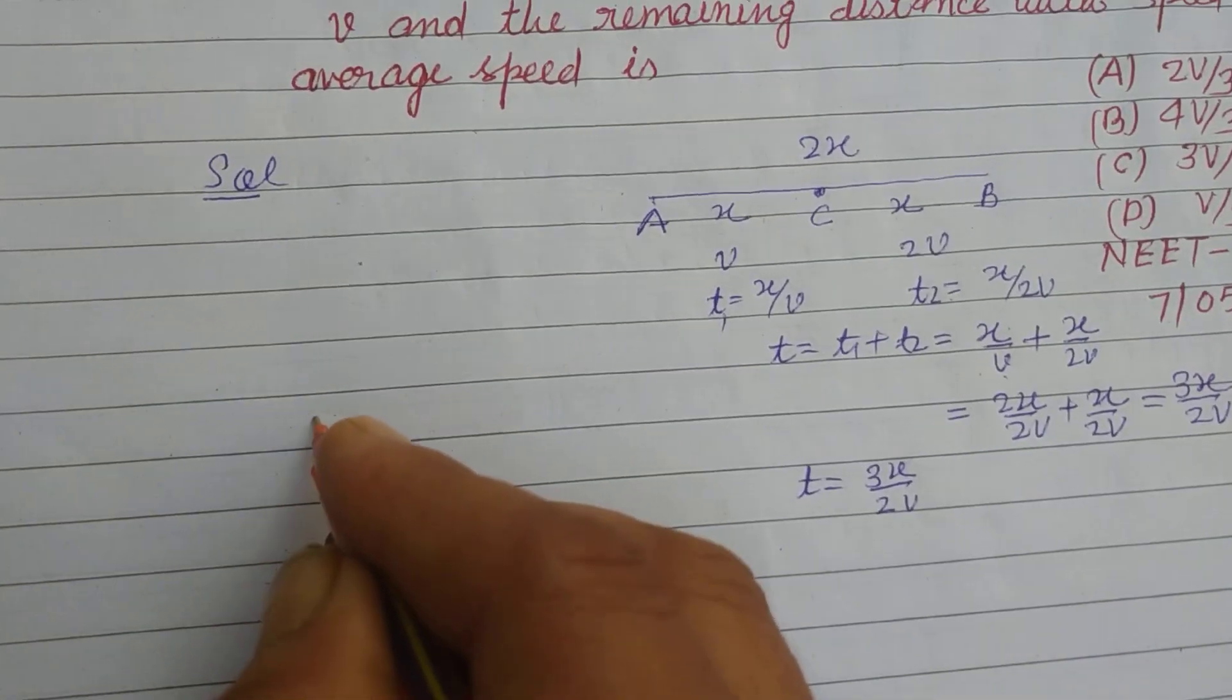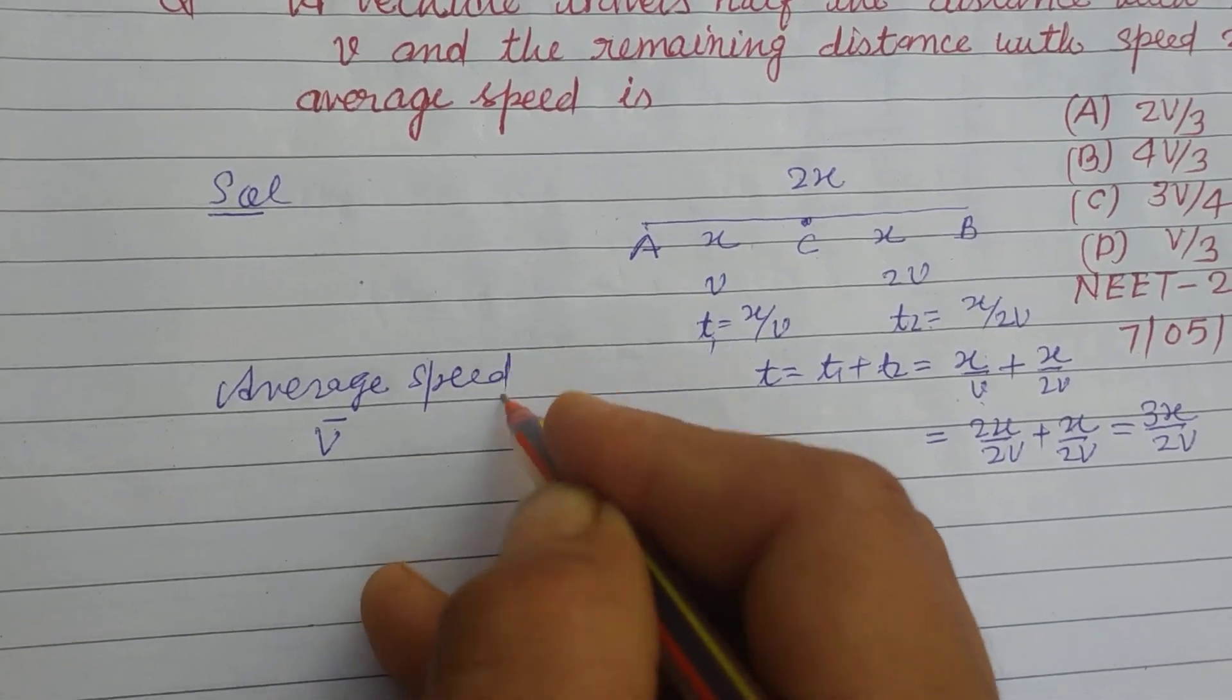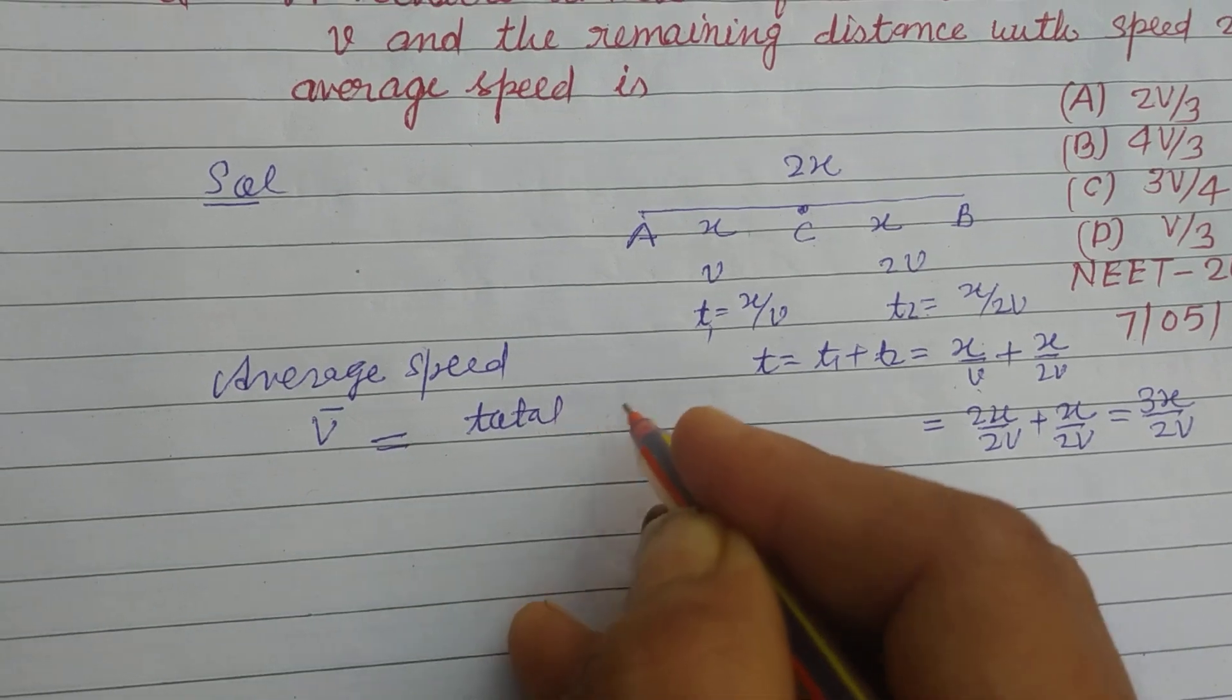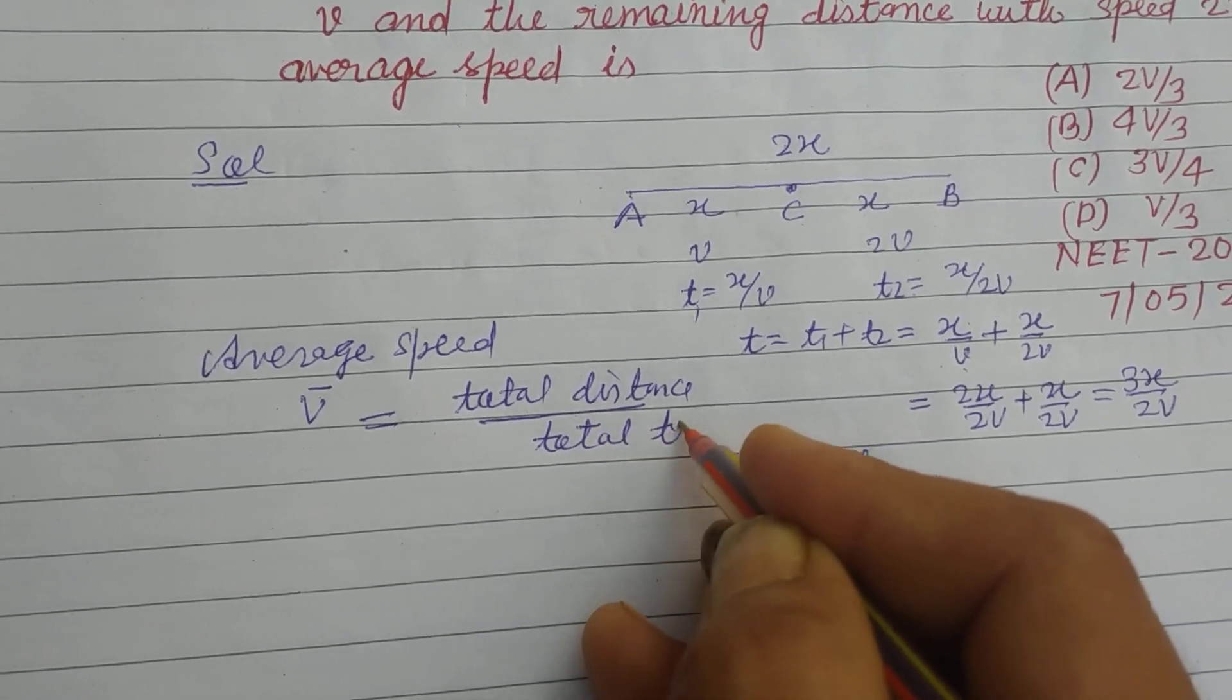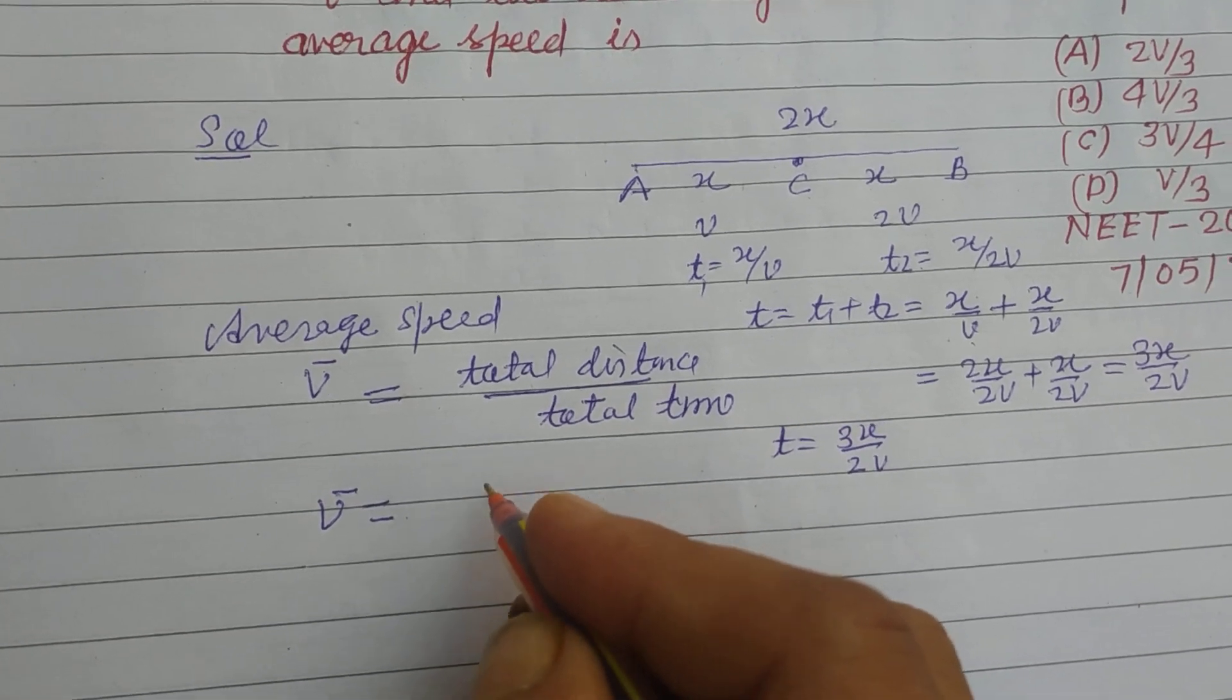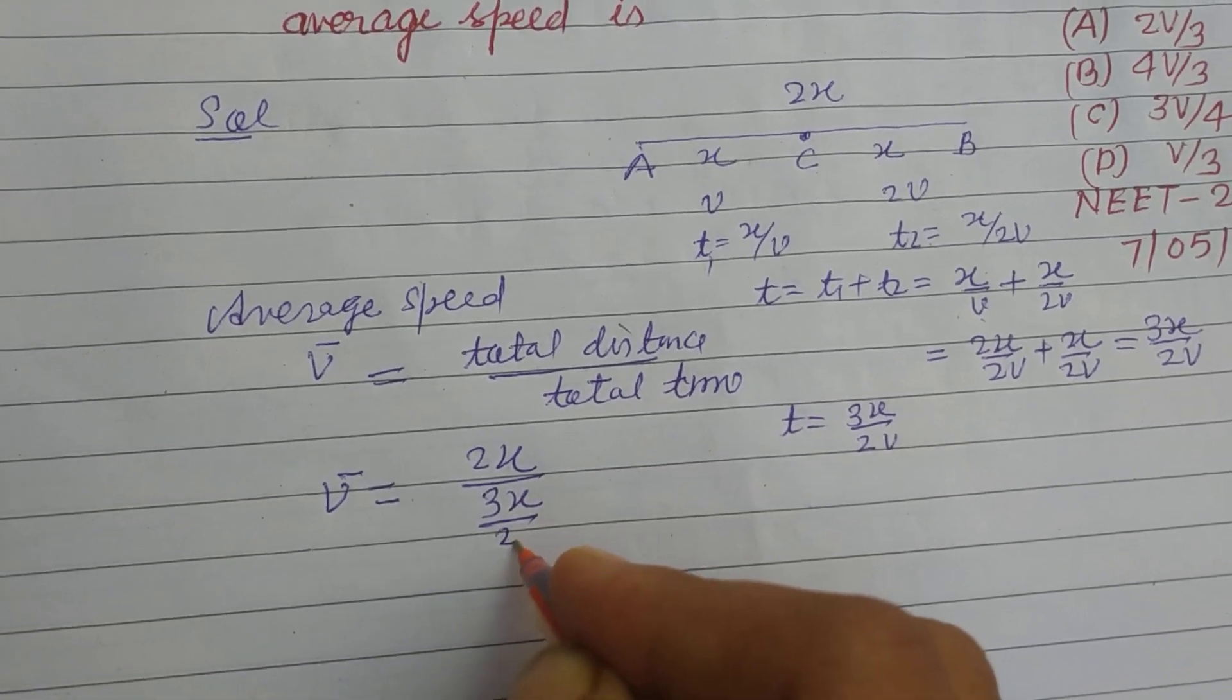Now, average speed equals total distance over total time. So v bar is total distance 2x and total time is 3x upon 2v.